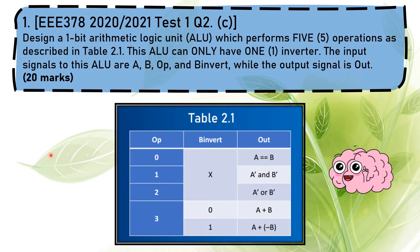The task given to me is to design a one-bit ALU that performs five different operations as described in the table. This ALU can only have one inverter, and the input and output of this ALU have been mentioned in the task.